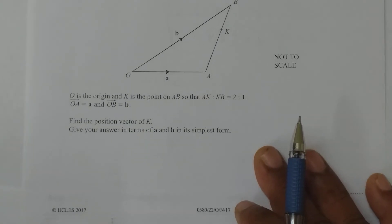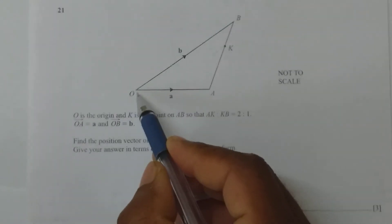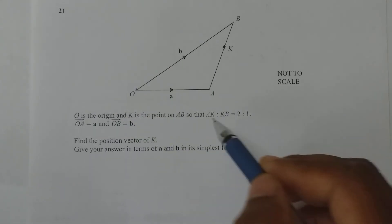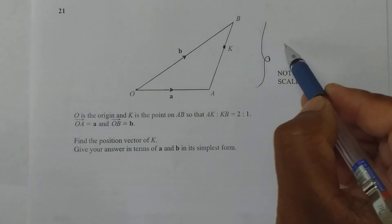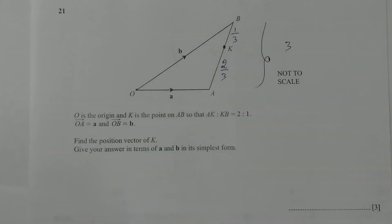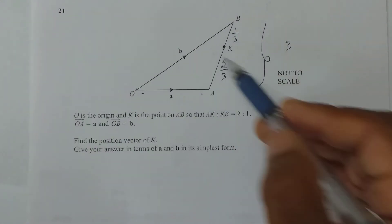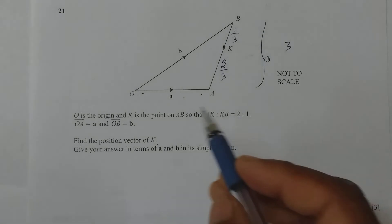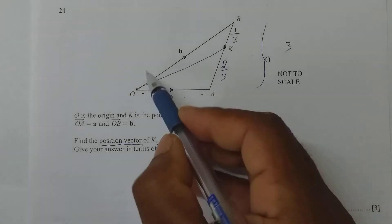Next one. O is the origin and k is a point on AB such that AK:KB is 2:1. If total is 3 parts, this is 2/3 of the total and this is 1/3 of the total. OA is a, OB is b. Find the position vector of k. Give your answer in terms of a and b. Position vector means it needs to start from O.